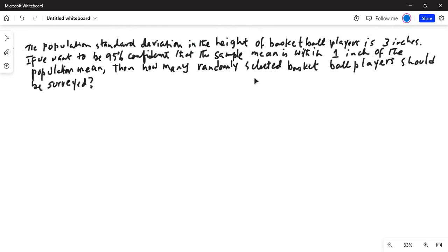The population standard deviation in the height of basketball players is three inches. If we want to be 95% confident that the sample mean is within one inch of the population mean, then how many randomly selected basketball players should be surveyed?